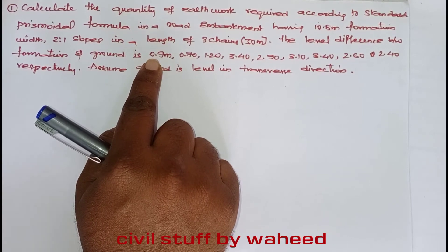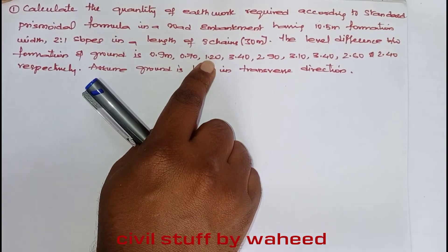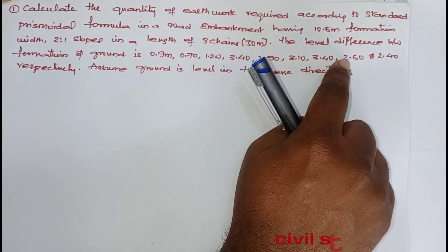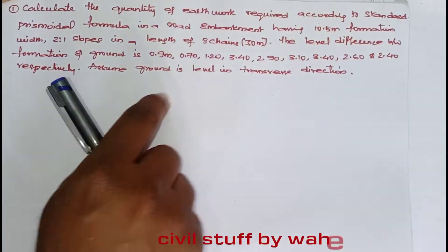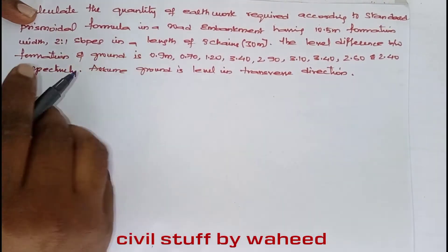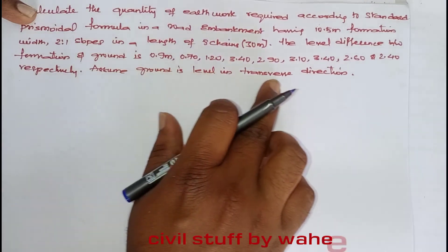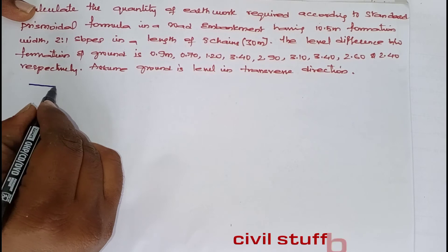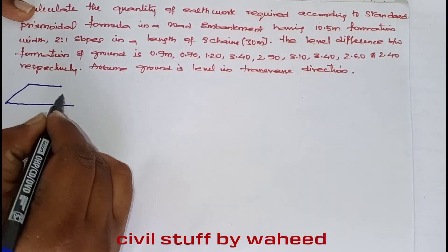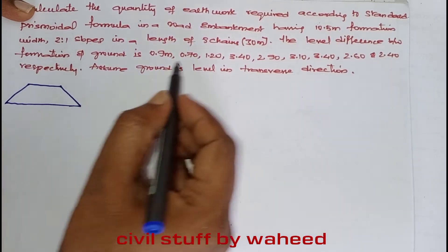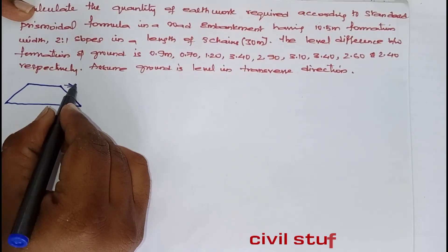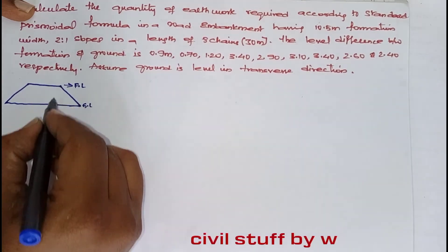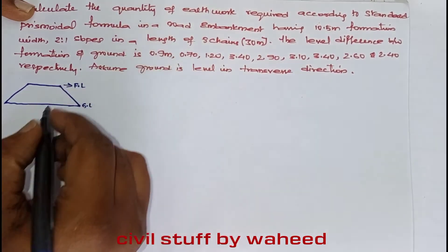The level differences between the formation level and ground level are given as: 0.9, 0.7, 1.2, 3.4, 2.9, 3.1, 3.4, 2.6, and 2.4 meters respectively. Assume the ground is level in the transverse direction. These values represent the difference between formation level and ground level at each chainage.